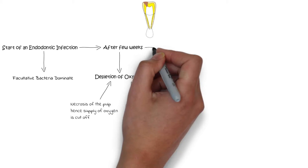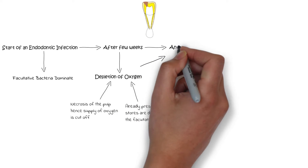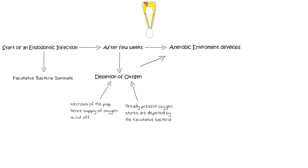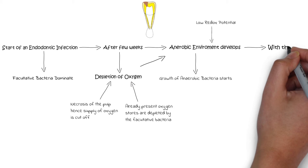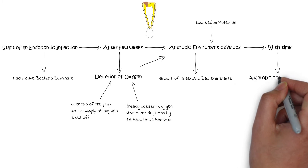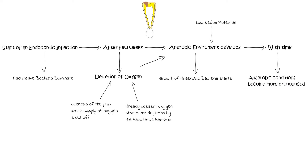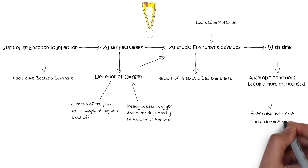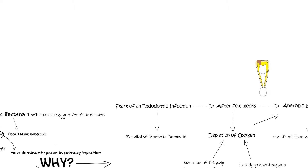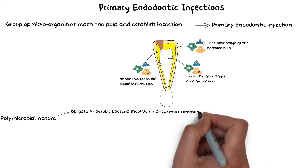As a result, an oxygen-depleted anaerobic environment develops with subsequently low redox potential. This low-oxygen environment is highly favorable for the growth of obligate anaerobic bacteria, and their growth starts in the infected pulp. With the passage of time, these anaerobic conditions become even more pronounced, especially in the apical region — the farthest area from the oral cavity. As a result, anaerobic bacteria start to dominate, eventually outnumbering the facultative bacteria. This is how obligate anaerobes become the most common species in the primary endodontic infection.